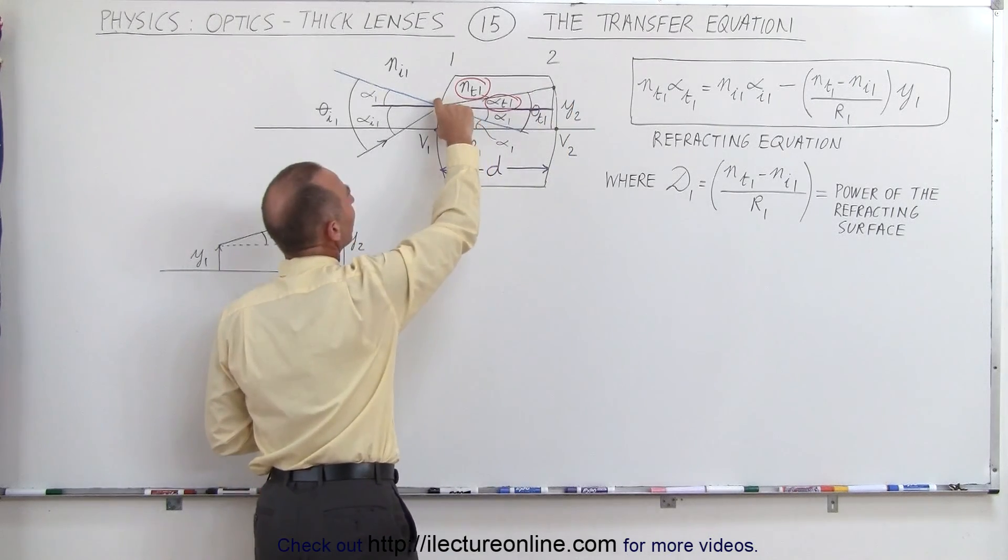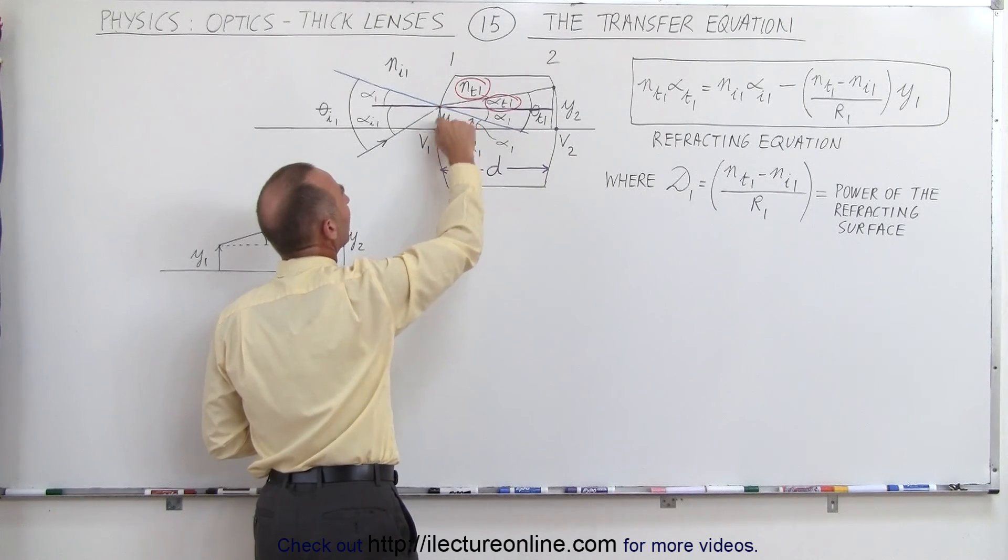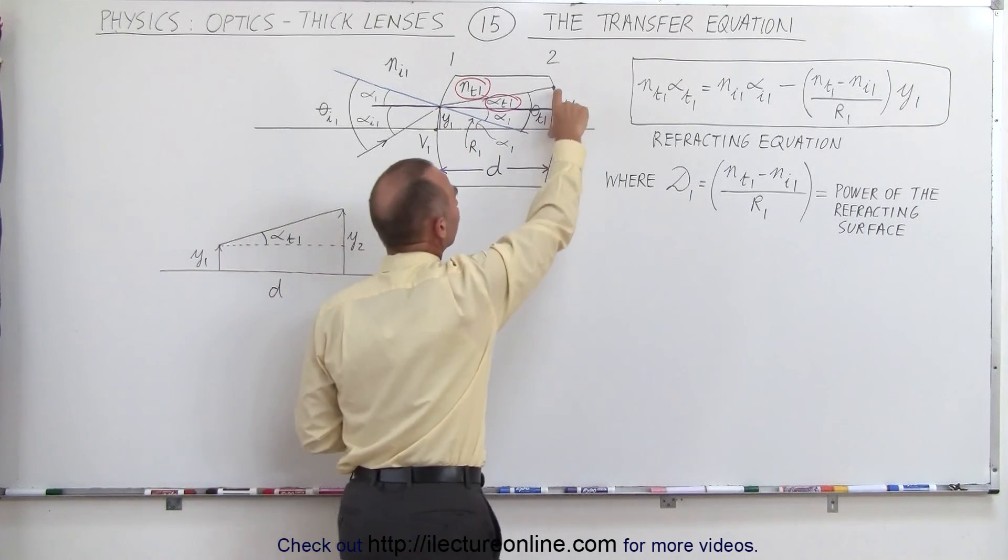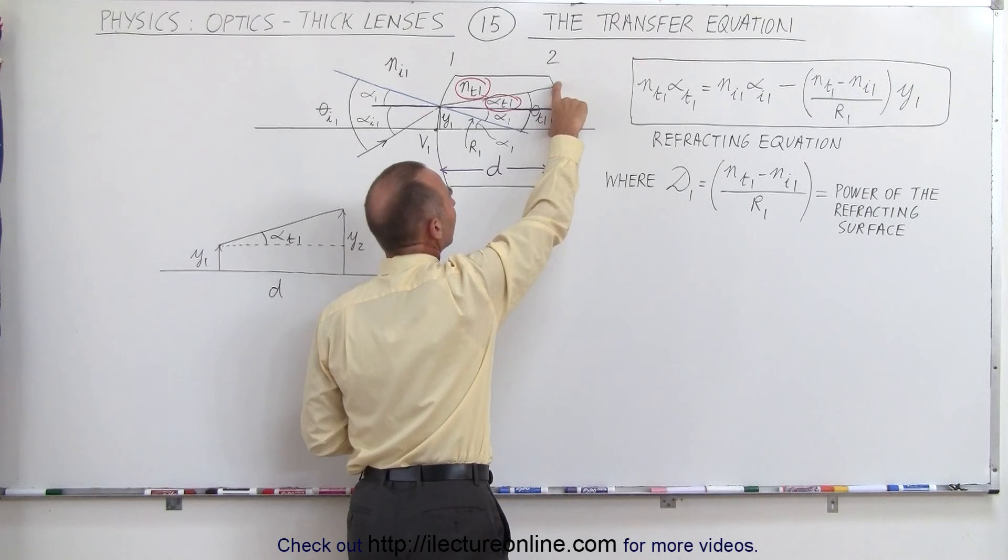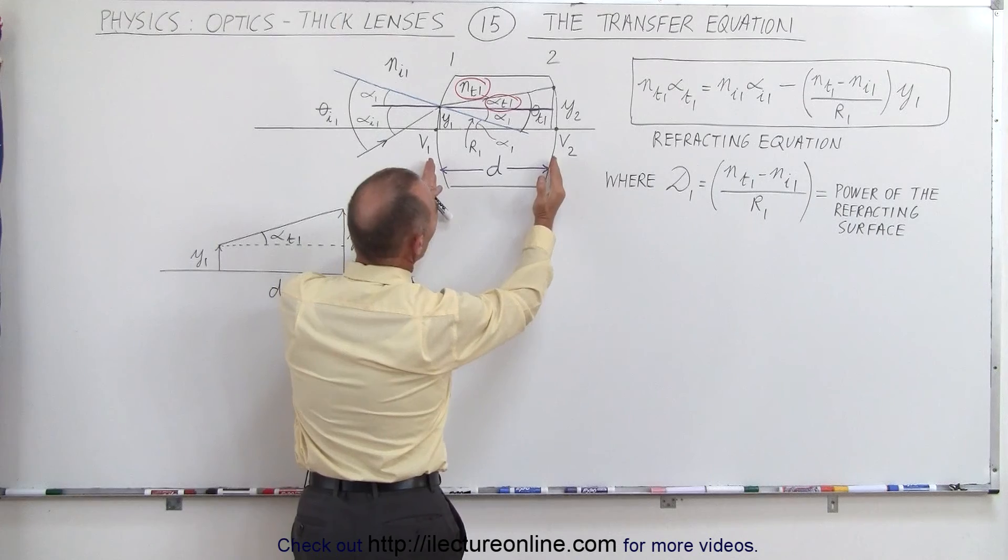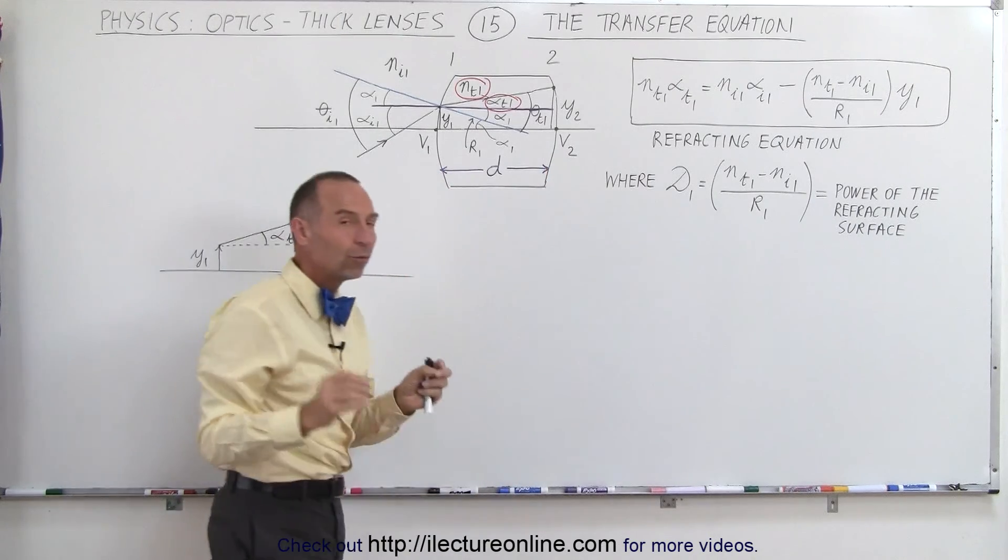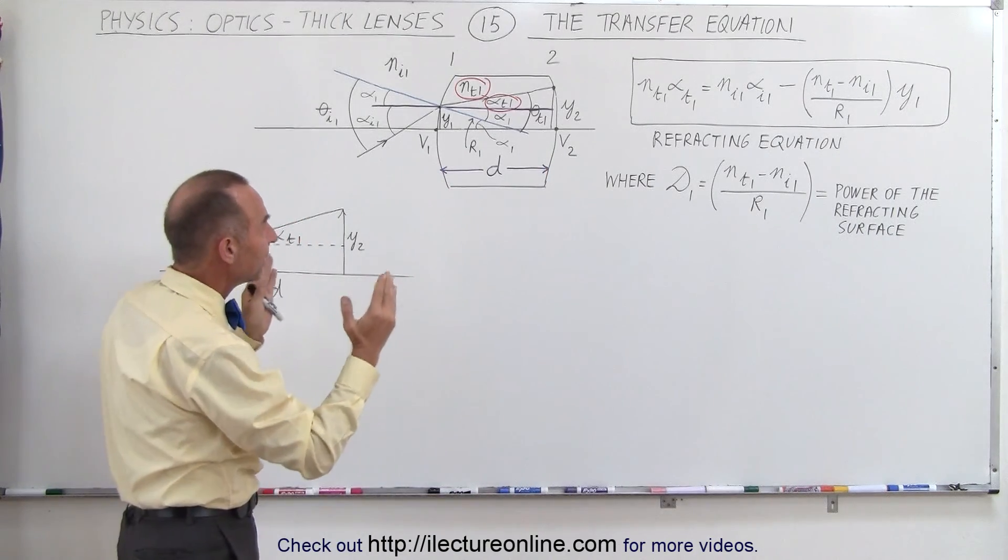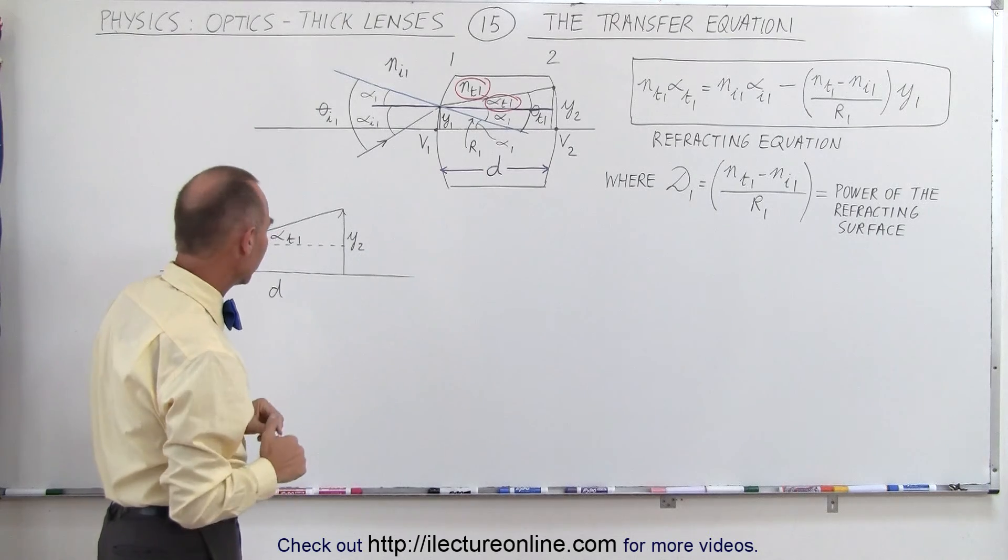And it's traveling along this path right here. Notice that it's incident at a point y1 above the optical axis, and it will then reach a point on the other side of the lens y2 distance above the optical axis. The distance between those two points is d, which is very close to the thickness of the lens.